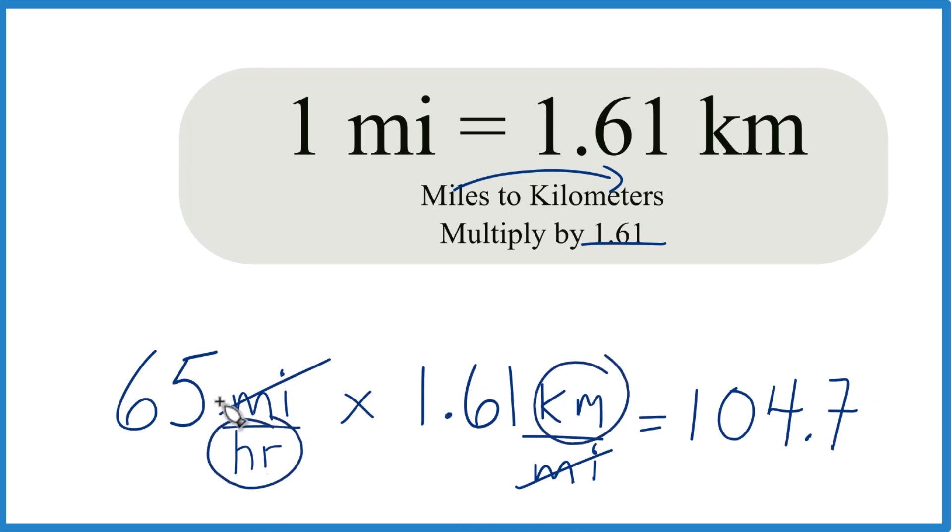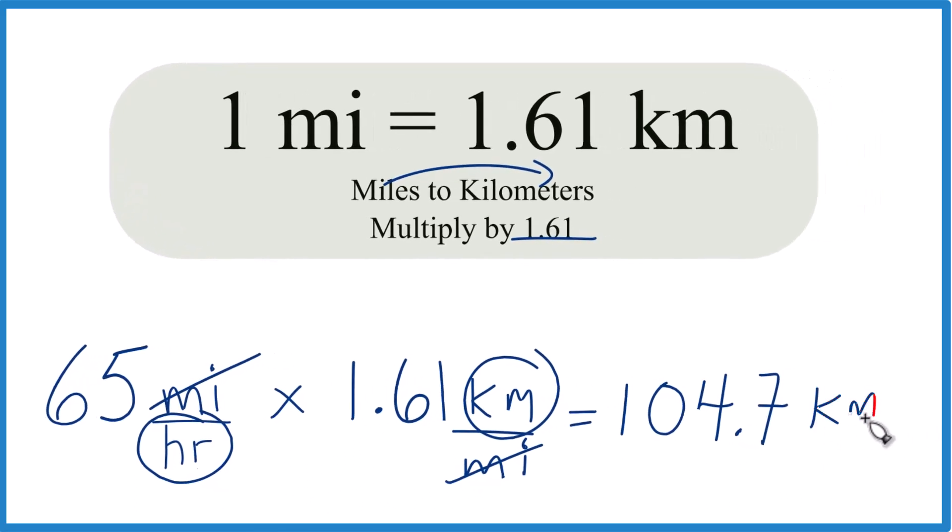So in answer to our question, 65 miles per hour equals 104.7 kilometers per hour.